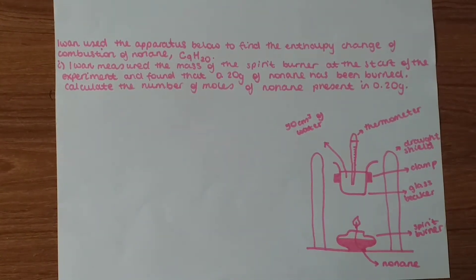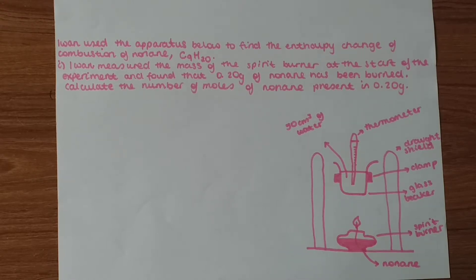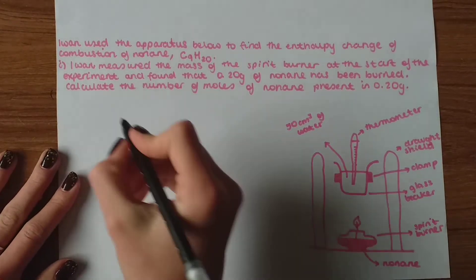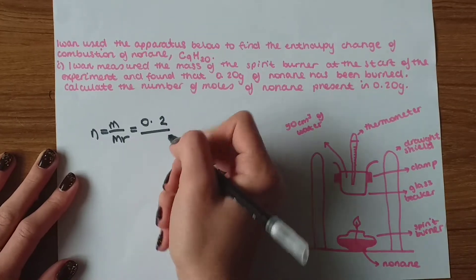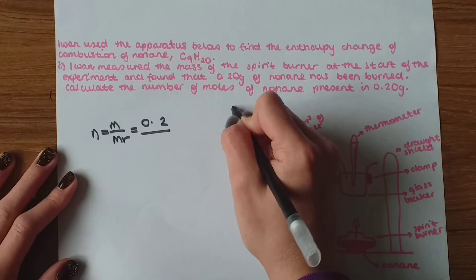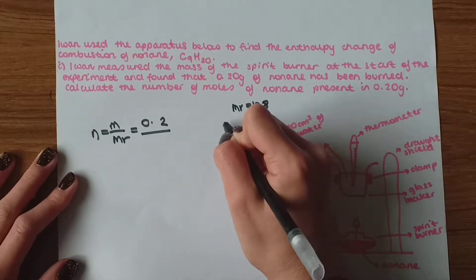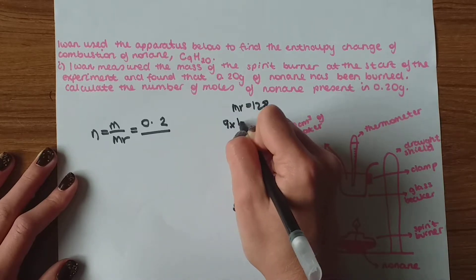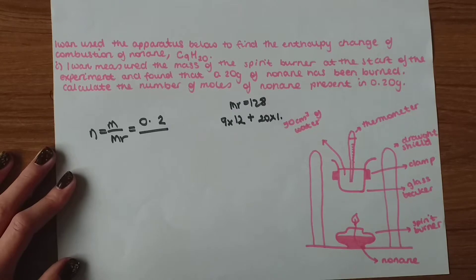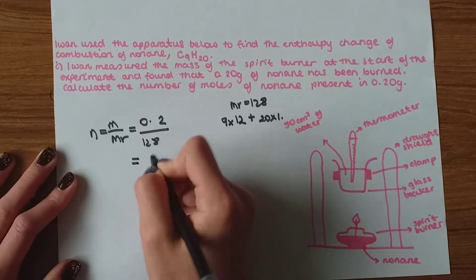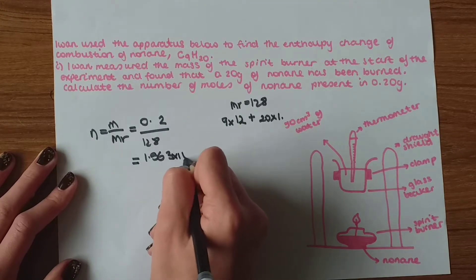The next question asks us to find the enthalpy change of combustion of nonane, C₉H₂₀. 0.2 grams of nonane has been burned. Calculate the number of moles of nonane in 0.2 grams. We use mass over Mr. The mass is 0.2 and the Mr of C₉H₂₀ is 128, calculated as 9 times 12 plus 20 times 1. This gives 1.563 times 10 to the minus 3 moles.